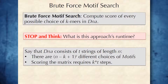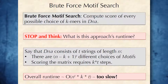Assuming there are T strings under consideration, all of length N, then there are (N minus K plus 1) to the T possibilities for how to form a motif matrix. Scoring the matrix requires K times T steps. Assuming K is much smaller than N, as is the case in practice, the overall running time is approximately O(N^T × K × T). The N to the T term means this algorithm is useless for practical values of N and T, so we need a faster algorithm.